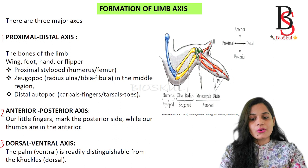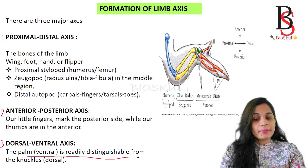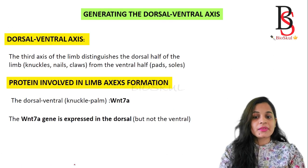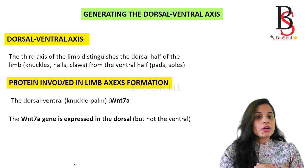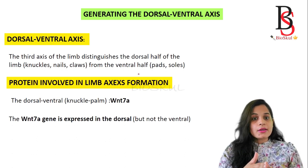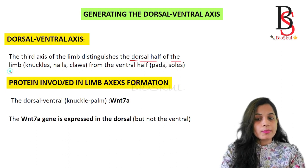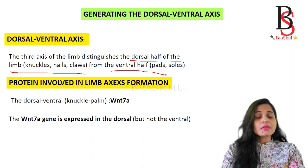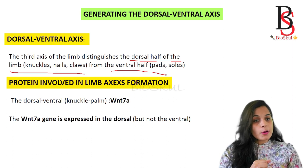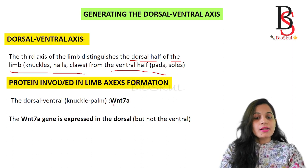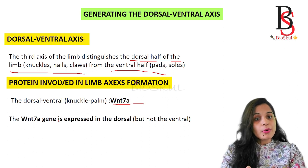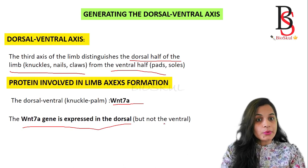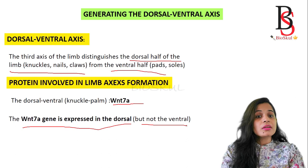The third axis is the dorsal-ventral axis. The palm (ventral) is readily distinguishable from the knuckle, which is on the dorsal side. The third axis of the limb distinguishes the dorsal half — the knuckles, nails, and claws — from the ventral half. The protein involved in dorsal-ventral limb axis formation is Wnt7a. Importantly, the Wnt7a gene is expressed only in the dorsal part and is not found in the ventral part.